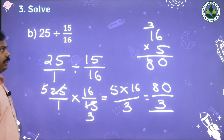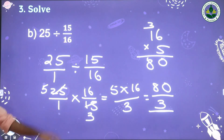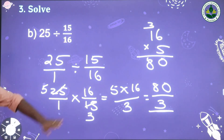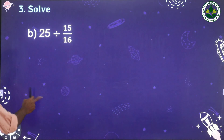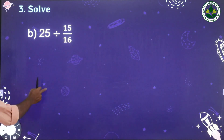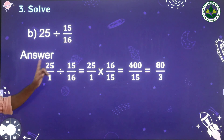We can change that into mixed fraction form by dividing 80 by 3. So the answer is 80/3 when we divide 25 by 15/16.